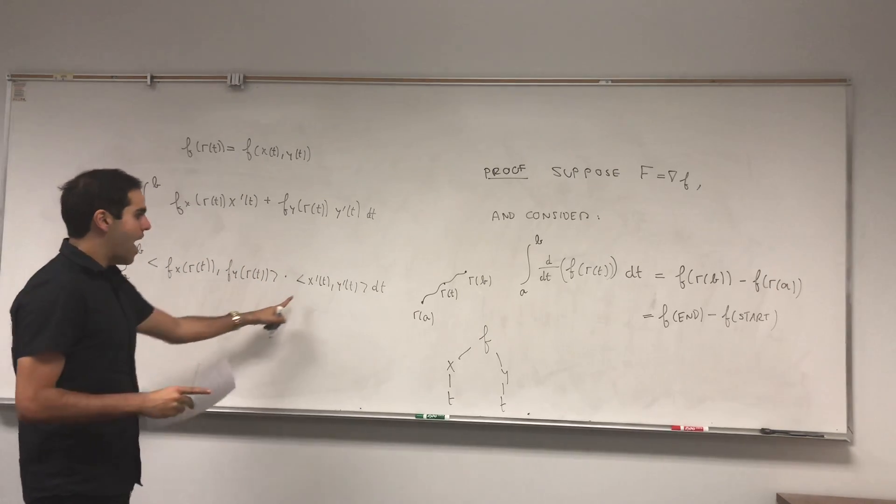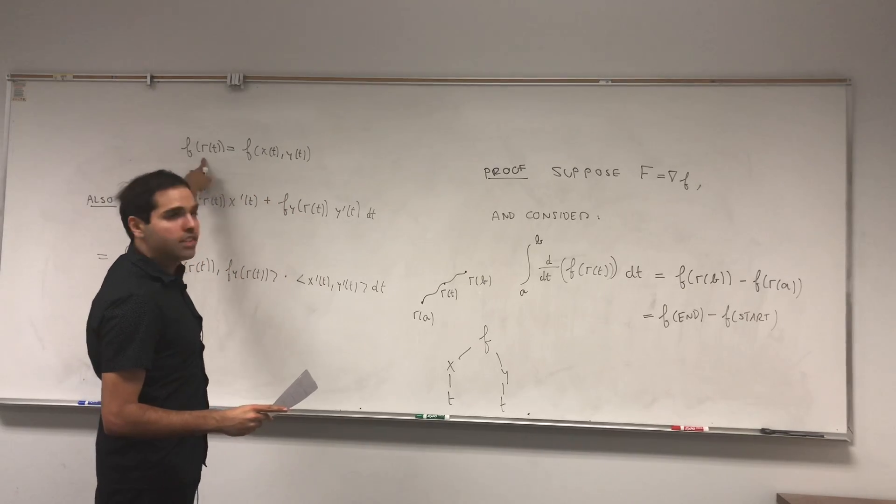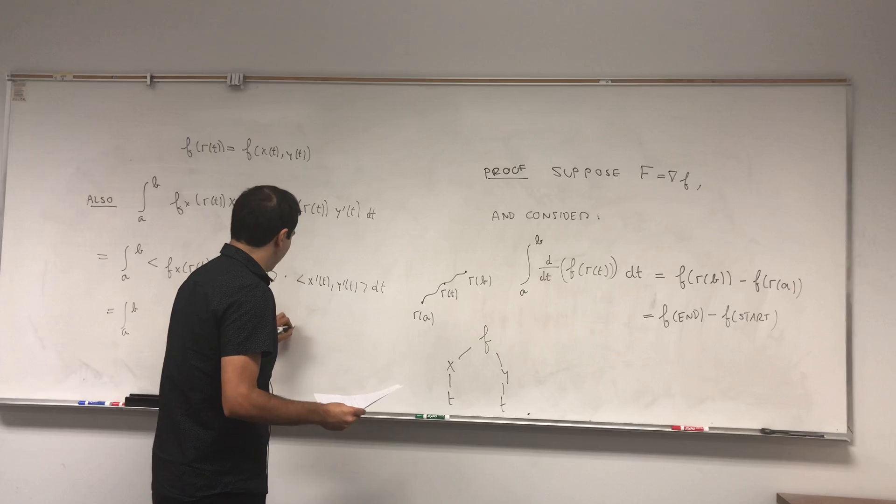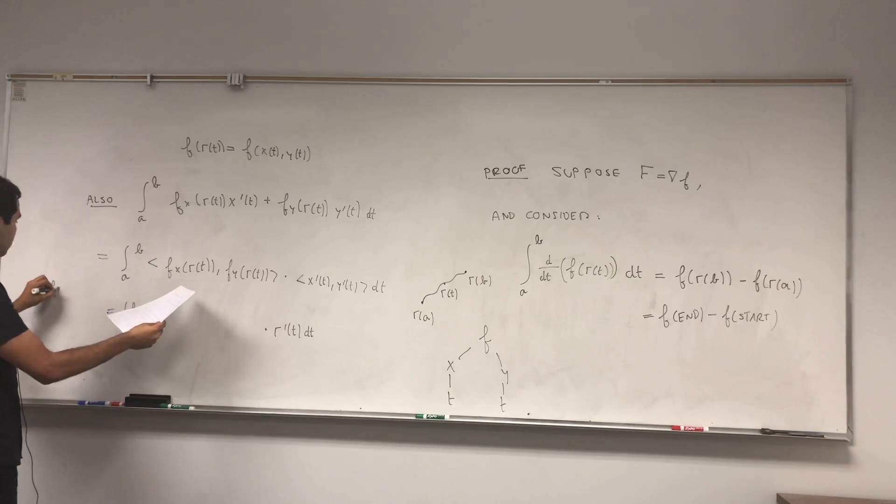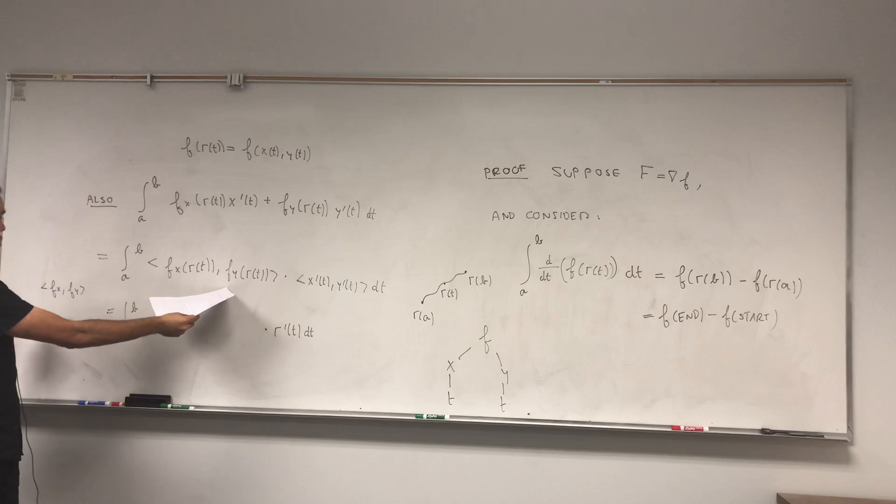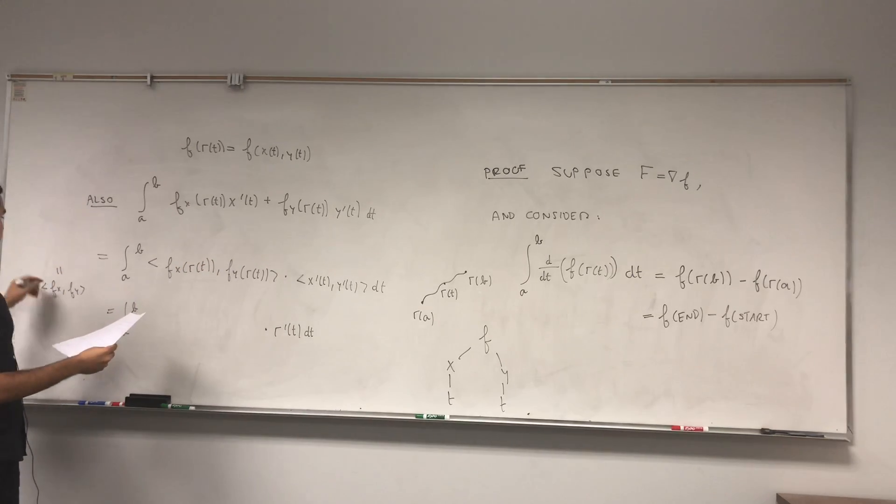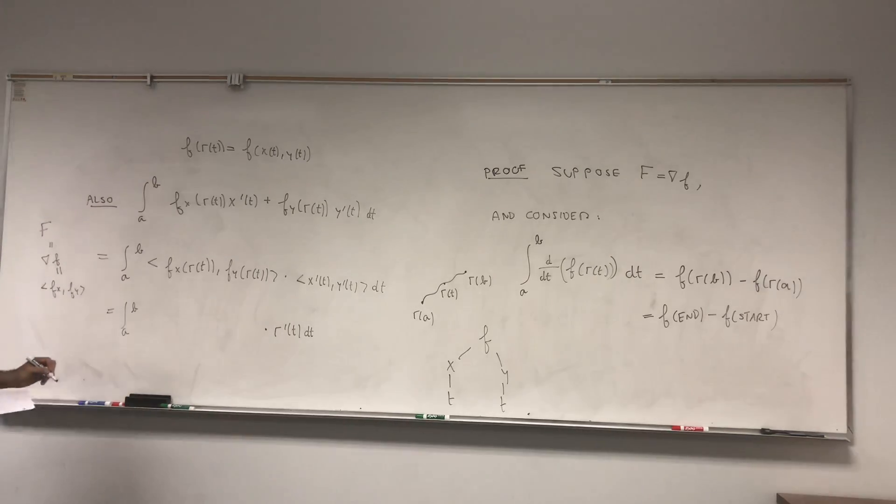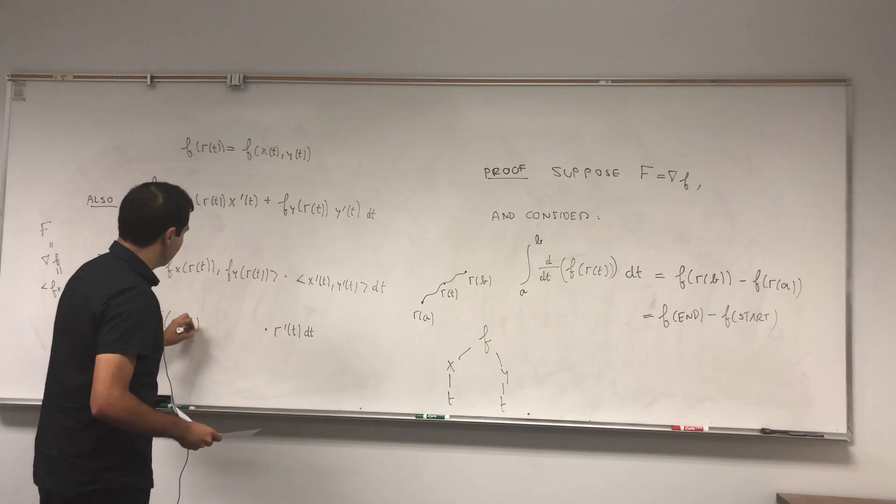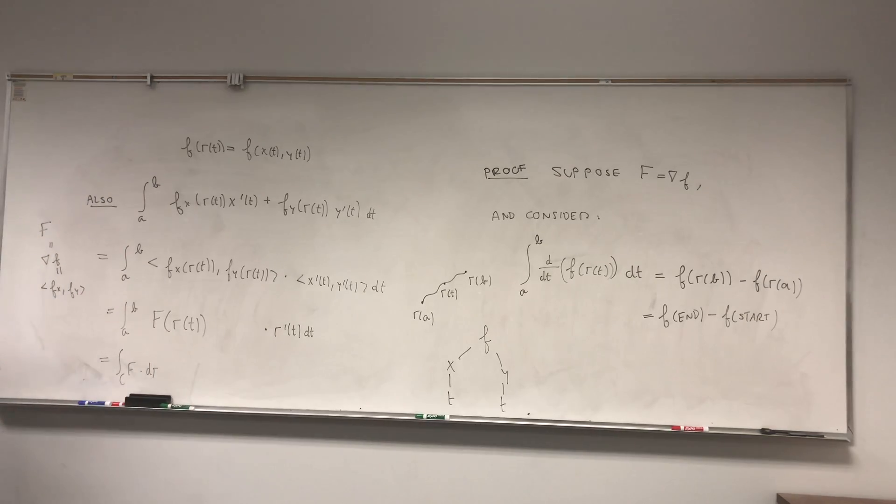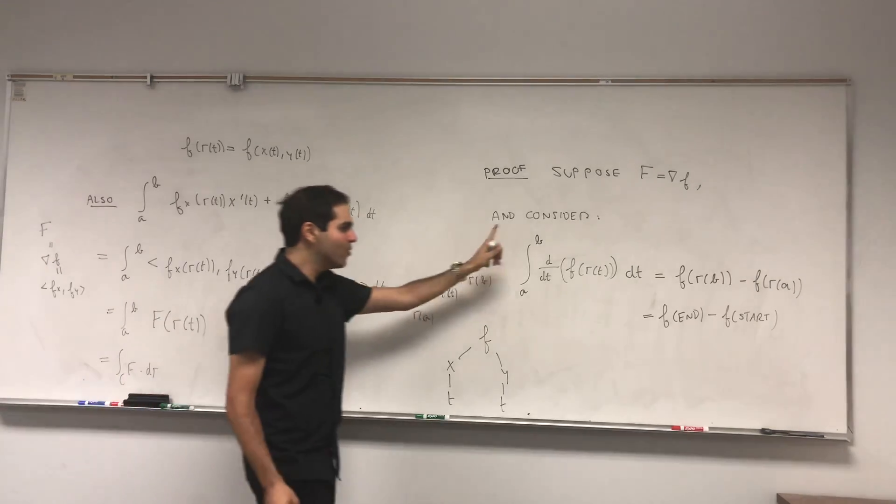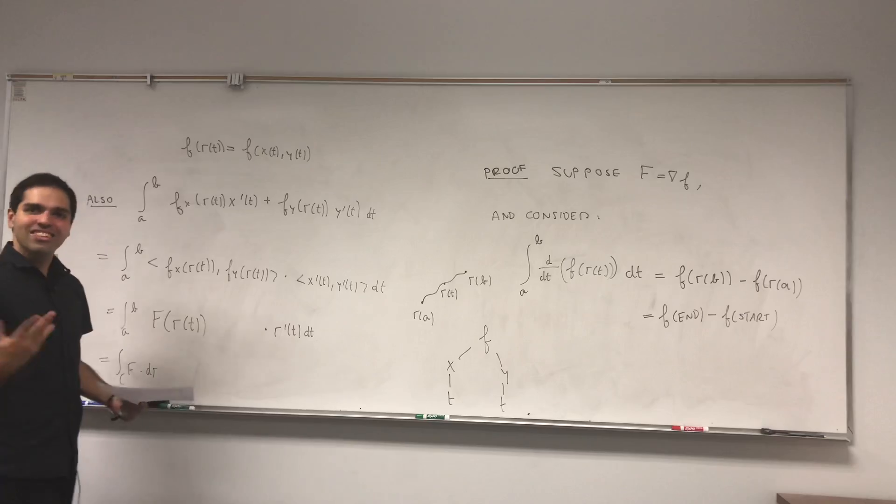Notice you have a sum of products so you can write it as a dot product. Integral from A to B of Fx r of t, Fy r of t, dotted with x prime of t, y prime of t dt. And we're almost done. So x prime, y prime is just the derivative of your vector r, so dotted with r prime of t dt. And notice here what we're really saying, we're really evaluating the vector Fx, Fy at r of t. But remember, this is the gradient of F, but by definition this was capital F. So that's capital F of r of t dotted with r prime of t dt, and that's the same thing as the line integral of F. So following this chain, or Shen Lu, of equalities, we get that the line integral of F dotted with r equals f of n minus f of star. And so here's a quick proof of it.